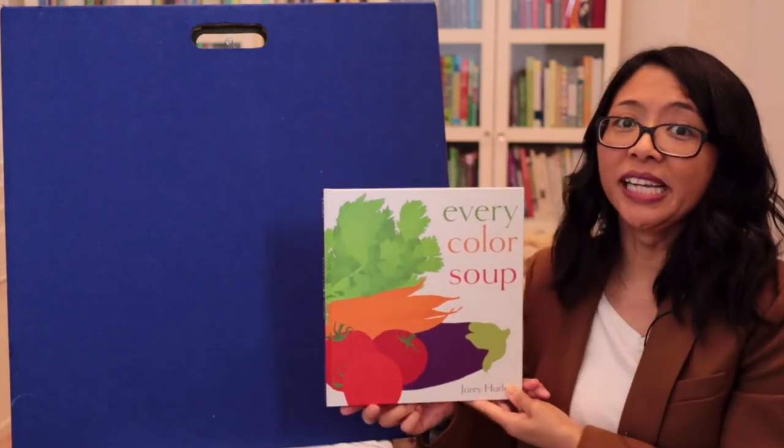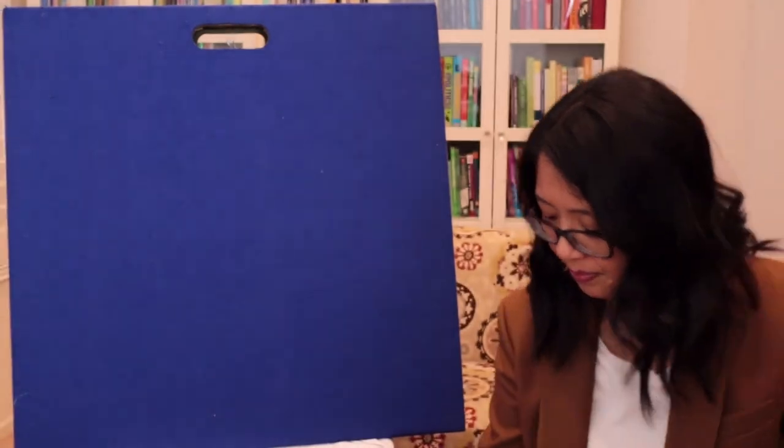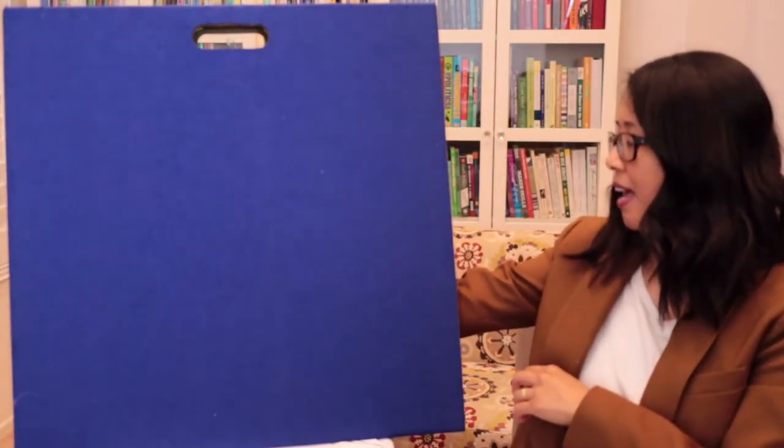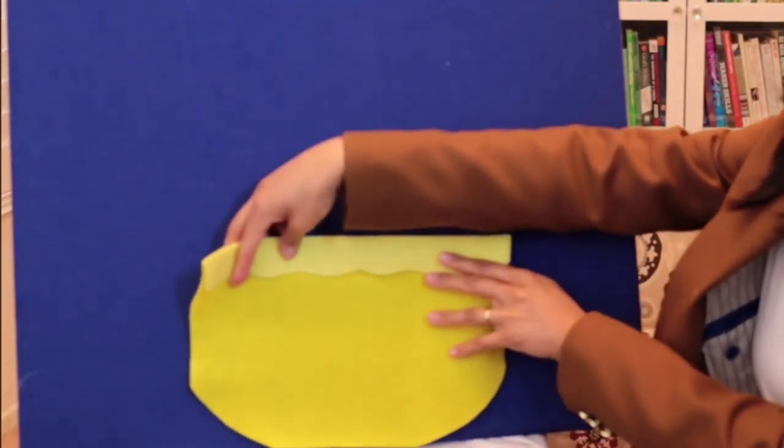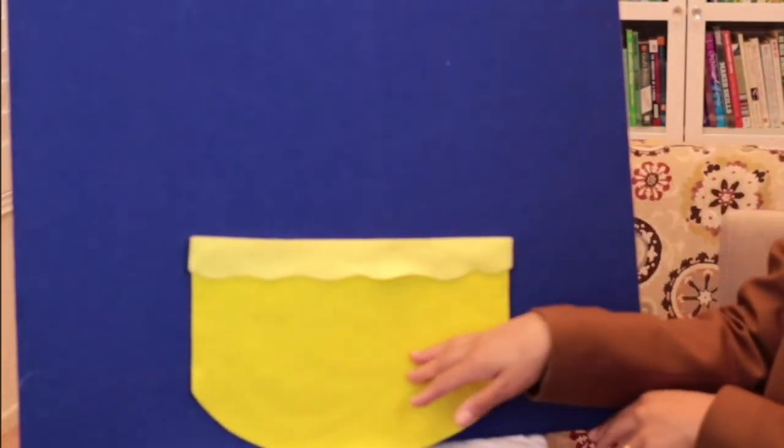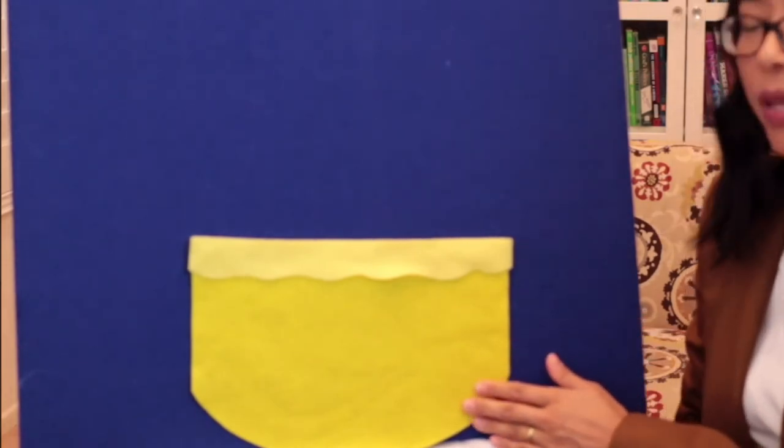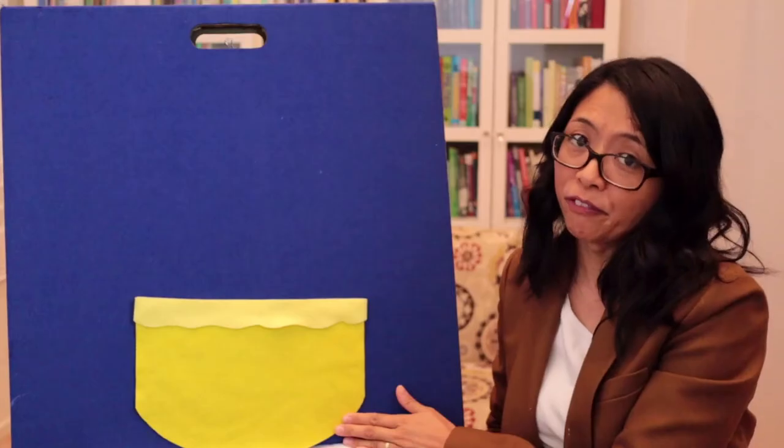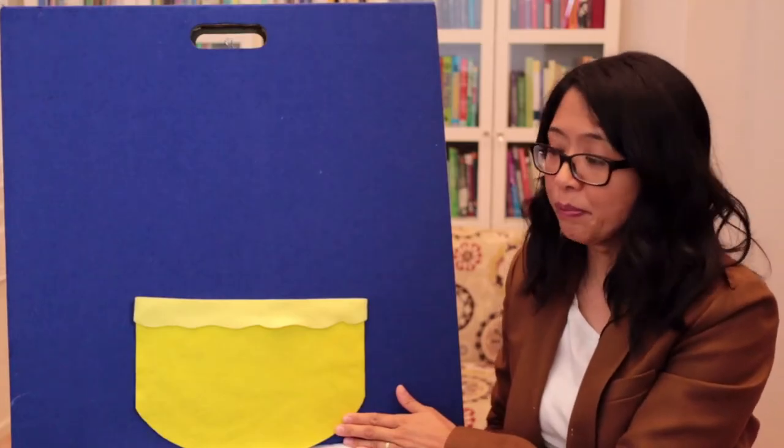Now, to extend the reading experience, there's a craft that you can make. So here I have a bowl and I use felt material. But if you don't have felt, you can use construction paper or fabric or maybe tissue paper.